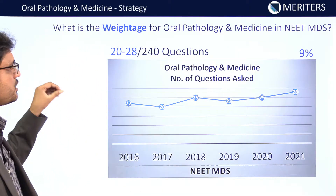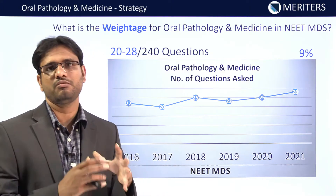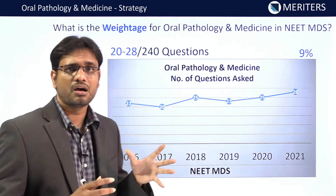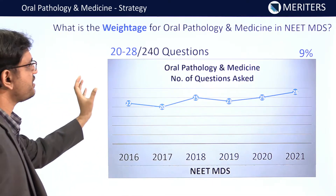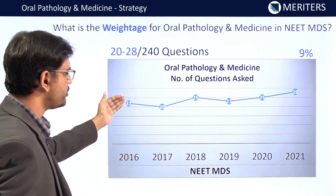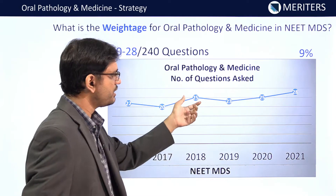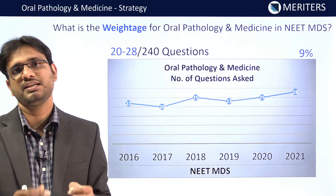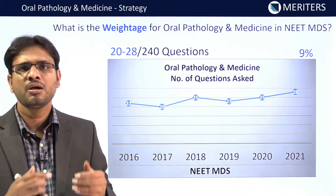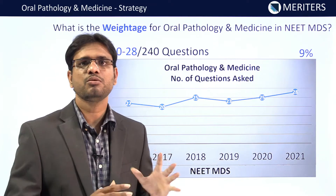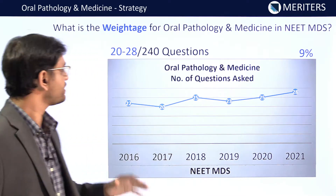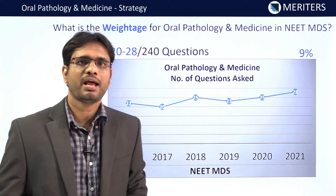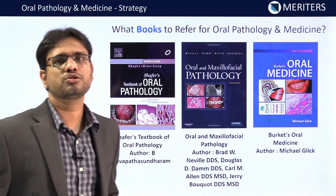Looking at the previous years' trend, questions specific to oral pathology and medicine — and there are many more interrelated or indirectly related questions beyond these — show the following pattern: in 2016 there were 22, in 2017 there were 20, in 2018 there were 25, last year almost 25, and this year almost 28 direct questions. Beyond those 28 direct questions, there are 10 to 15 more questions indirectly related to oral pathology and medicine knowledge. So specific questions were almost 20 to 28 out of 240, accounting for approximately 9%, which is the maximum weightage any subject can have in NEET and INICT.